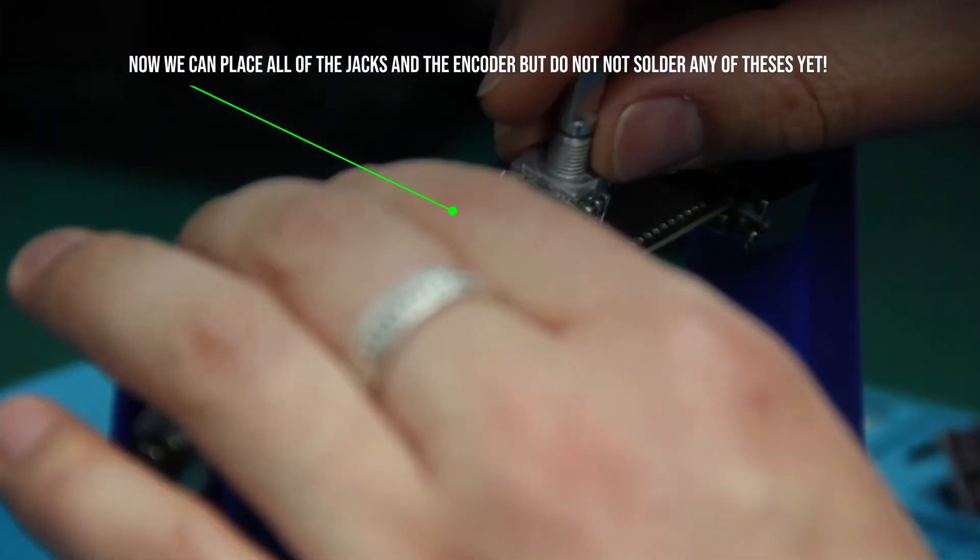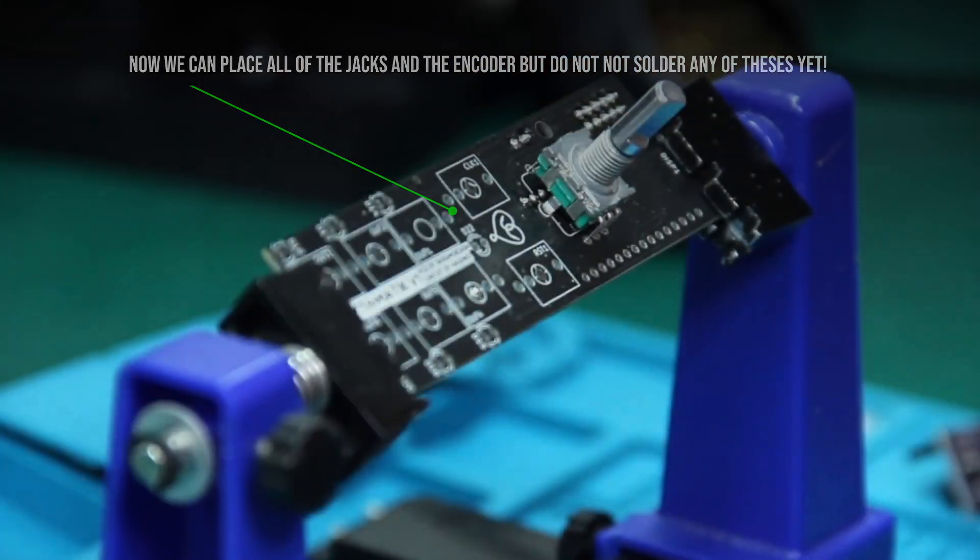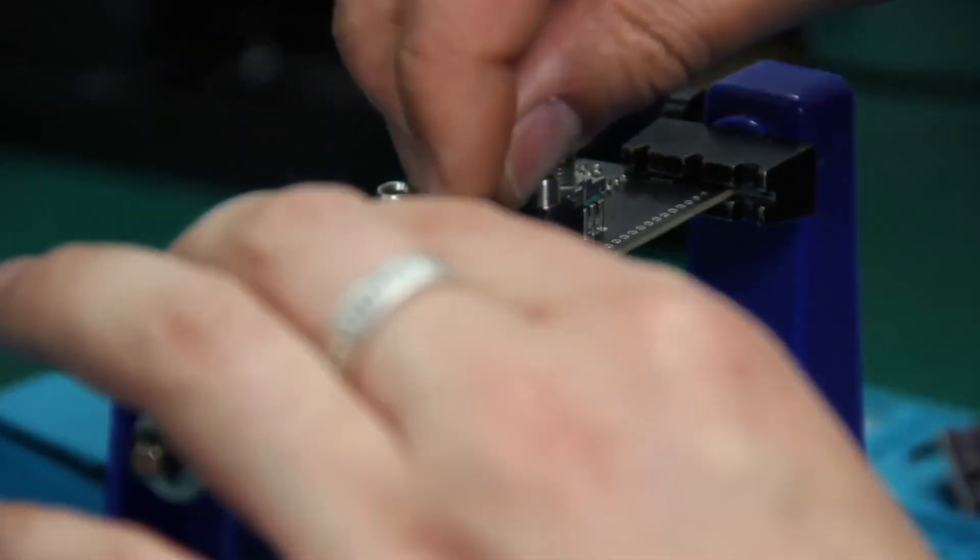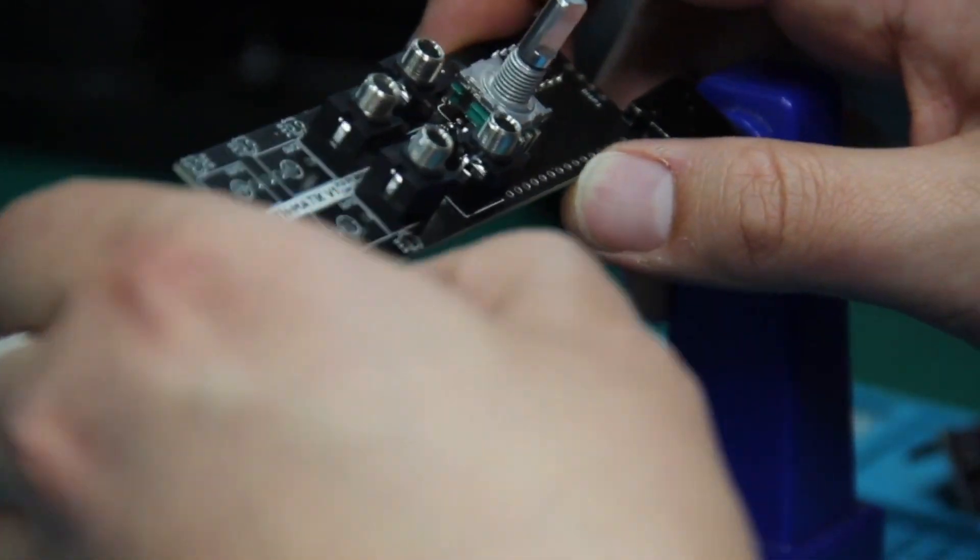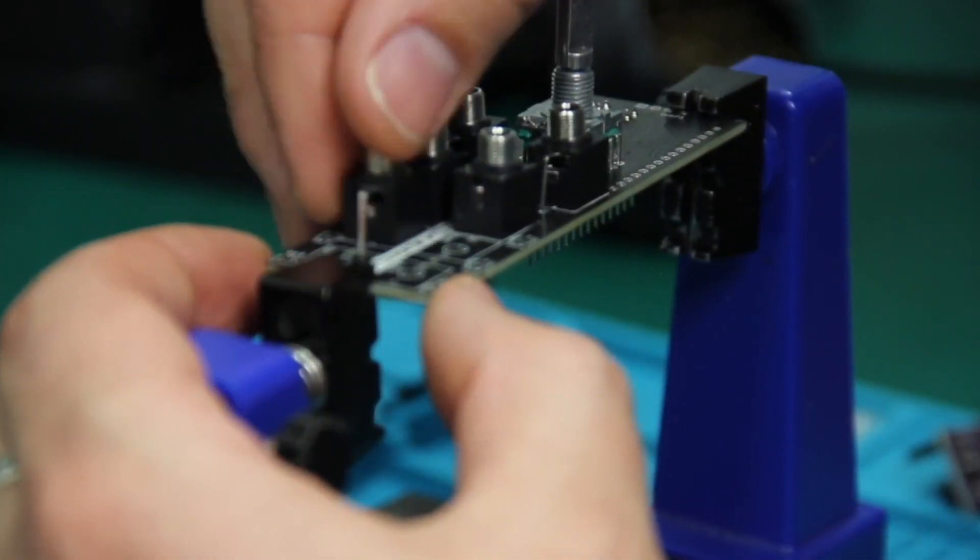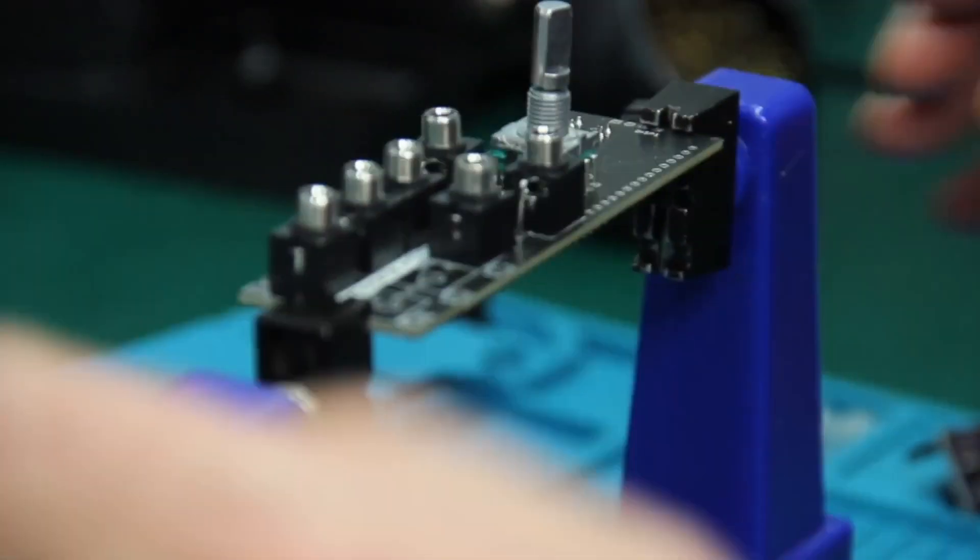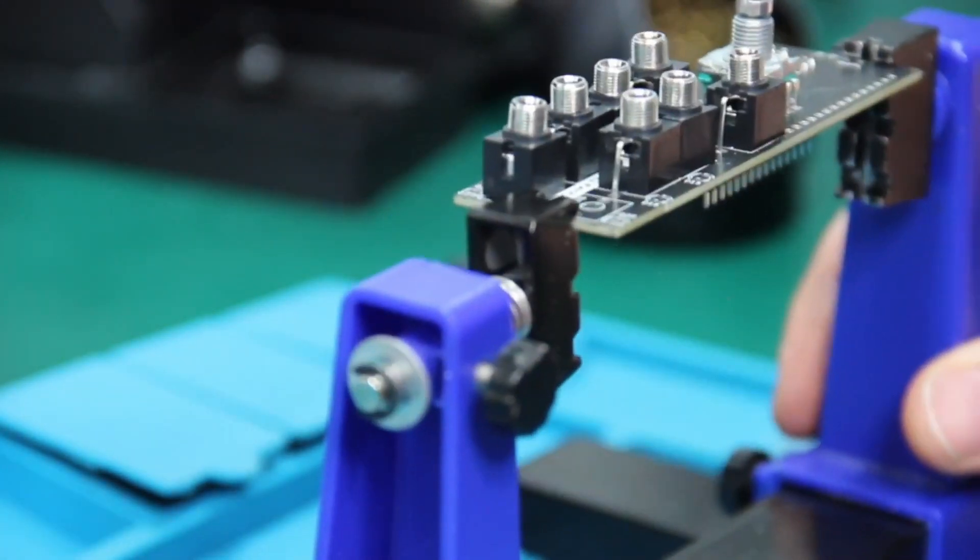Now we can place all of the jacks and the encoder, but do not solder any of these yet. It is much easier if we place all of these components and then attach the front panel first before soldering. This will also ensure that the front panel will fit mechanically.